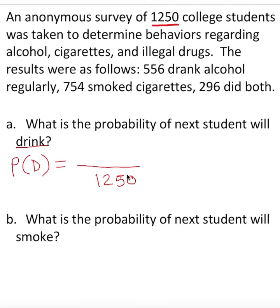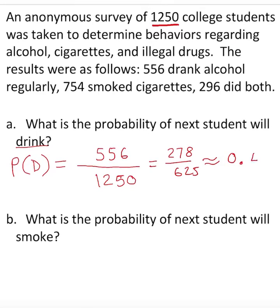On top, we put the number who drink — 556 drink alcohol. So P(D) = 556/1250. We can convert this to a reduced fraction: 278/625. In decimal form that is 0.445, and as a percentage, the probability of D is equal to 44.5%.